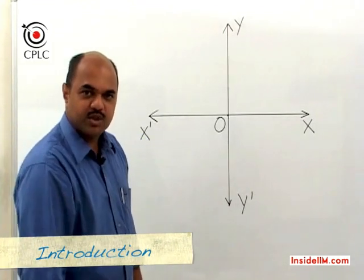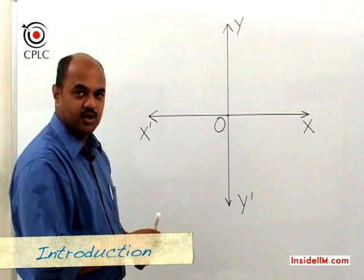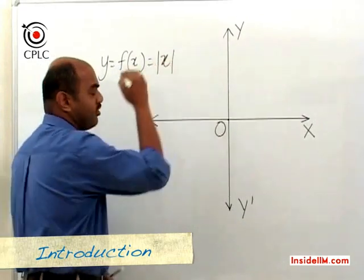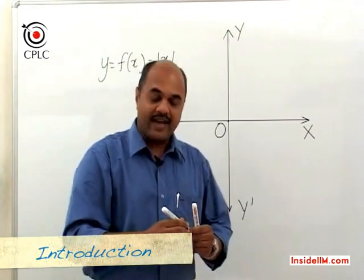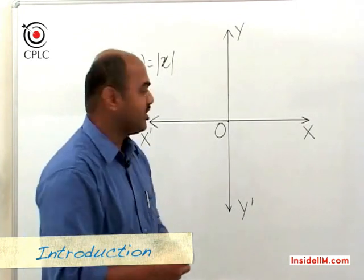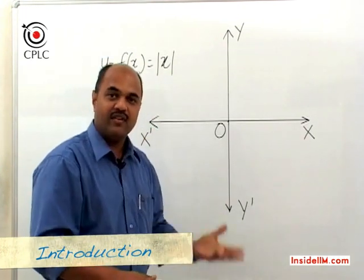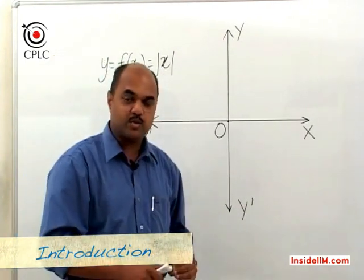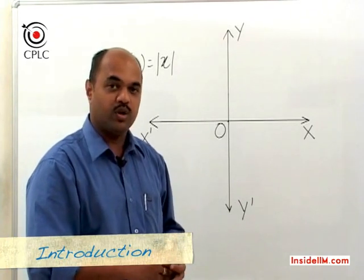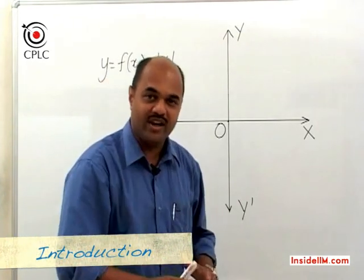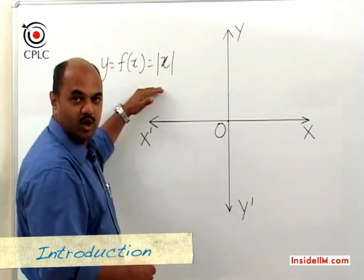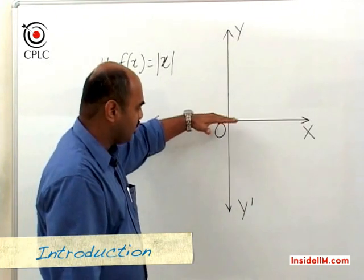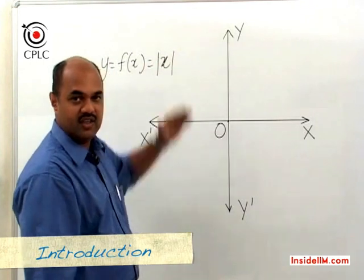Let's look at another type of function known as the absolute value function or modulus function. Suppose y = f(x) = |x|. The characteristic of an absolute value function is that whether x is positive or negative, y will always be positive. If x is 0, then y will be 0. Hence, the absolute value function will always give a non-negative value, so the graph will originate from the x-axis and remain above it.